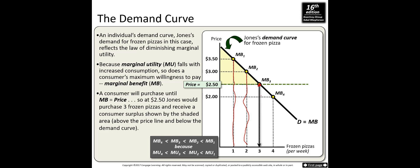The third pizza gives Jonas $2.50 of marginal benefit. How many pizzas is Jonas going to buy? It depends on the price. As a rational decision maker, he compares marginal benefit and marginal cost. The price of pizza is $2.50, and the marginal benefit from the third pizza is also $2.50, so he's going to buy three pizzas. He will consume as long as marginal benefit equals marginal cost.